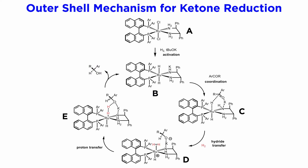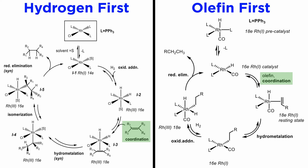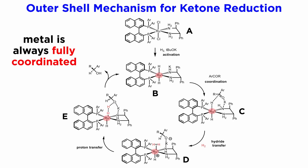Of course there are some speculative components in this mechanism, but its key elements are clear: the substrate binds to the ligand and is activated by it in order to receive a hydride from the ruthenium center, and the protonation also comes from molecular hydrogen through activation by ruthenium. The outer shell mechanism may actually be a deciding factor in making these catalysts so stable, as the metal remains fully coordinated at all times and is therefore more stable.